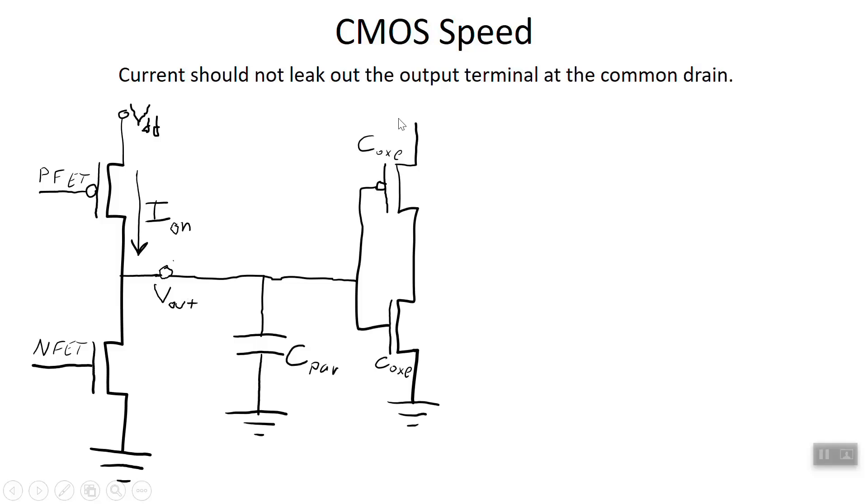This is how we model it. Here's the next gate. You never have a single inverter ever. You always have a chain of them. So here we have an inverter, and here we have the next inverter. The next inverter has its gate capacitance, C oxide. And there's parasitic capacitance, which is tied up in the drain of the first MOSFET, as well as the metallic interconnects between devices. These are the capacitances involved.